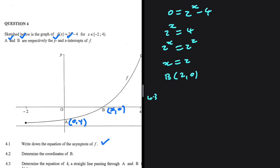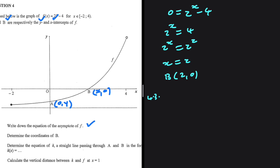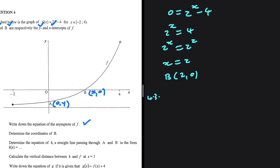Let's go ahead and do 4.3. We're supposed to determine the equation of k, a straight line passing through a and b in the form k of x. If it is a straight line, then this is mx plus c. We need the gradient, and after finding the gradient we can substitute b or a to find c. To find the gradient we need two points. For b we know we have (2, 0), and if we can find the coordinates of a, we'll be able to determine the gradient of k of x.